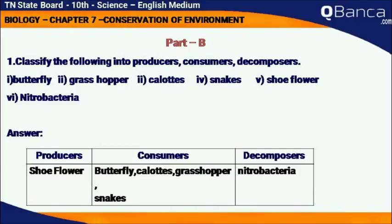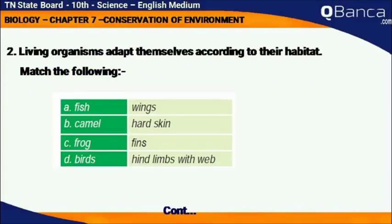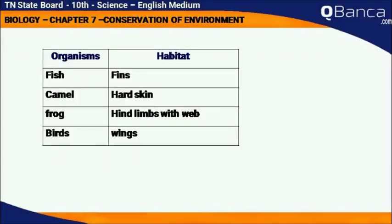Nitrobacteria. Living organisms adapt themselves according to their habitat. Match the following organisms to their habitat: Fish — Fins, Camel — Hot Skin, Frog — Hind Limbs with Web, Birds — Wings.